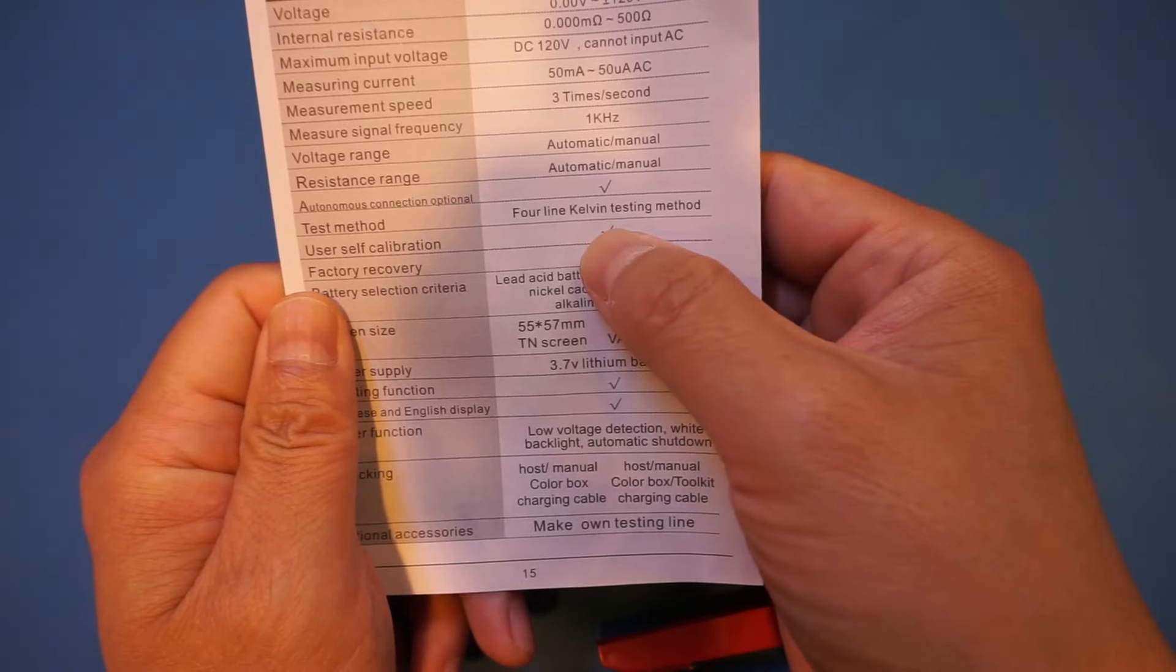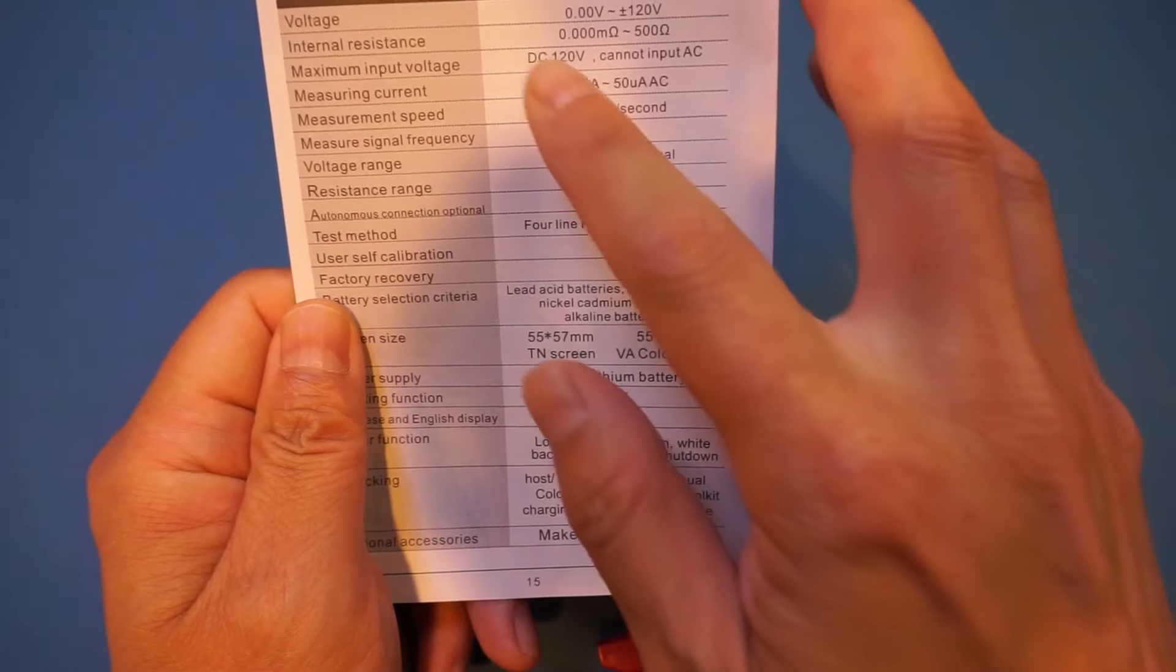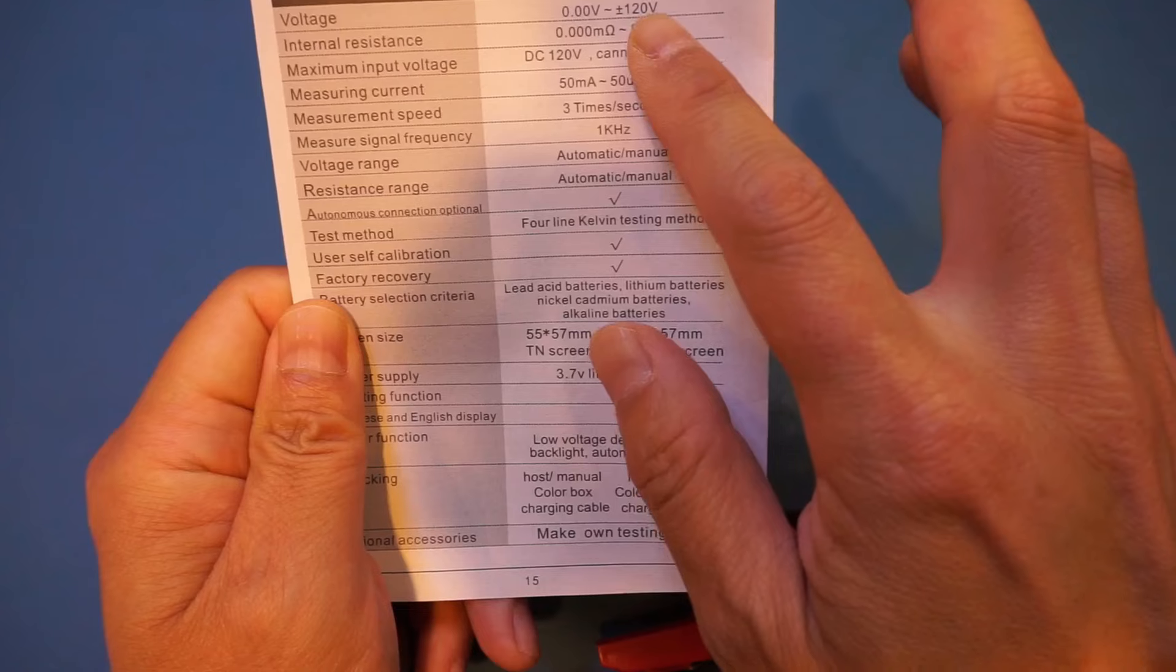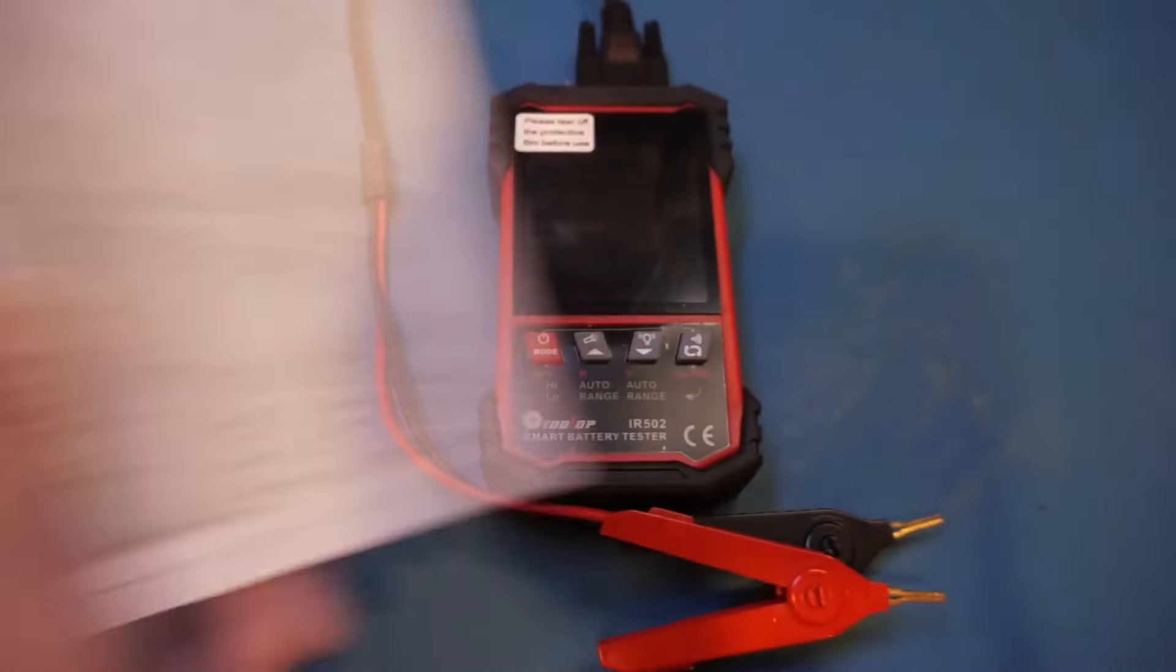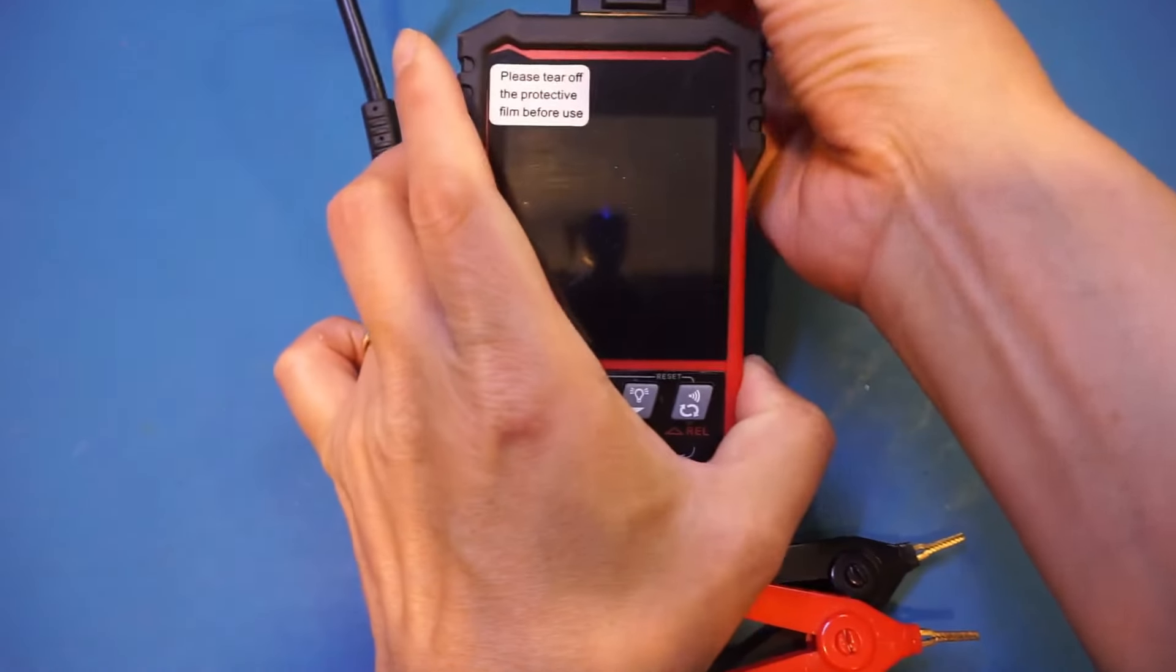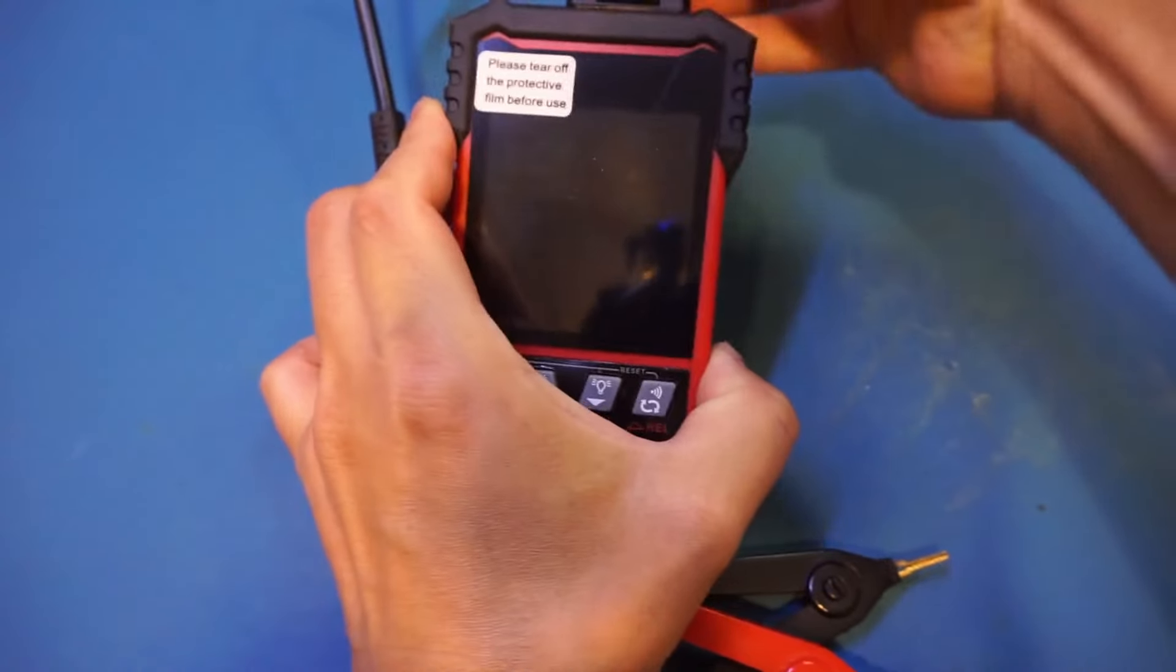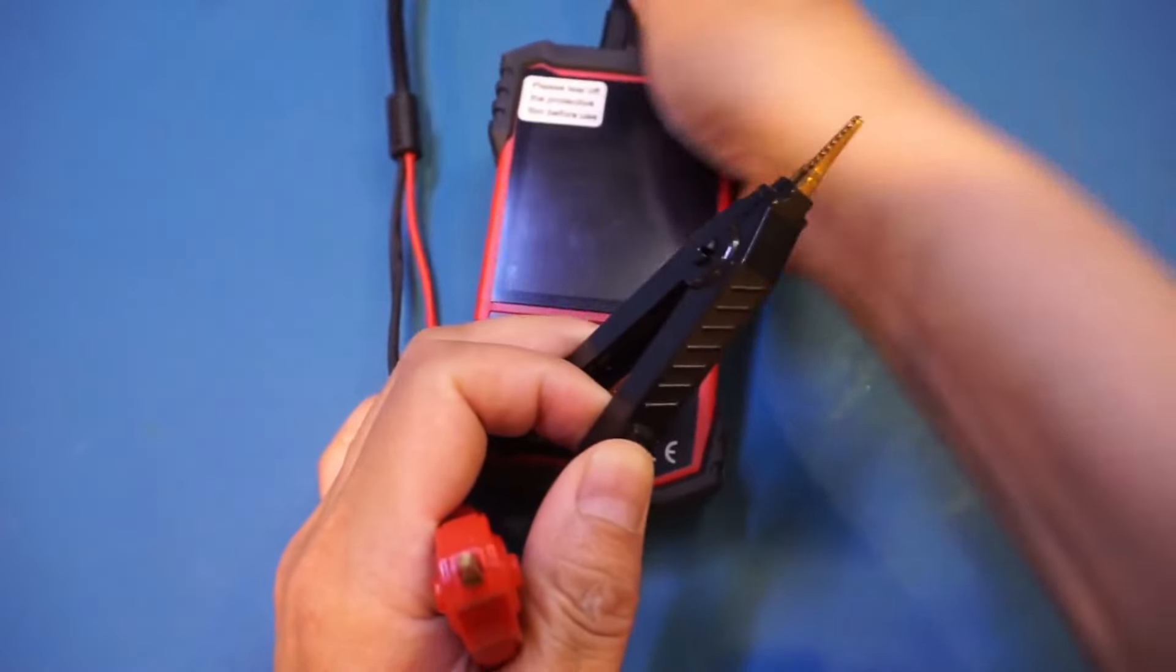Looking at the specifications here, you can see that the maximum input voltage is at 120 volts plus/minus, and it can measure internal resistance up to 500 ohms. One thing a little bit odd is the choice of the connector used for the input probes. These are Kelvin clips, which are common for low resistance measurement.